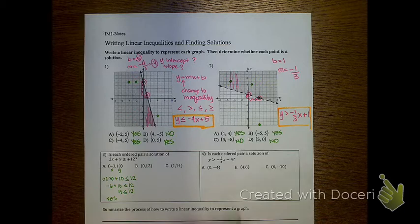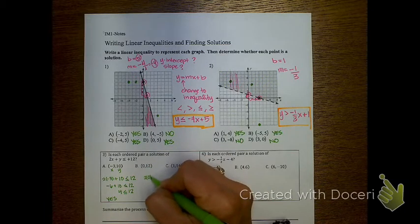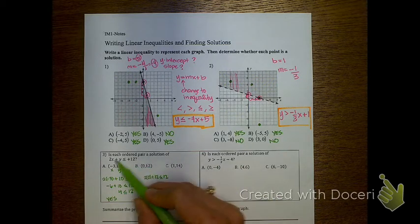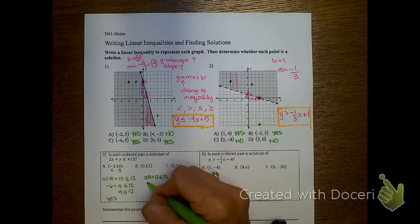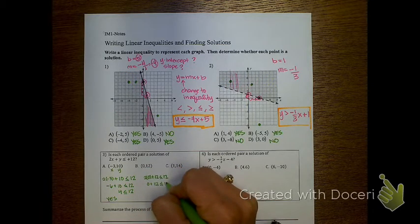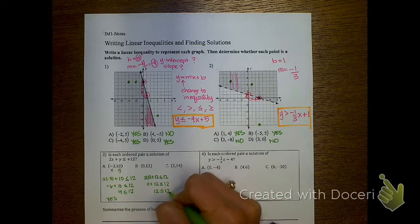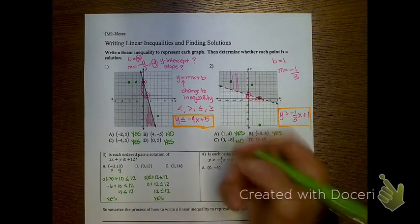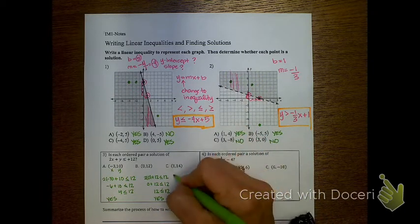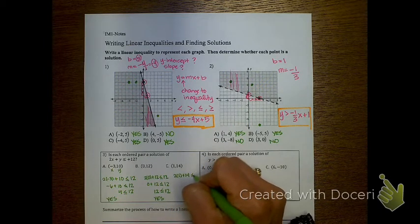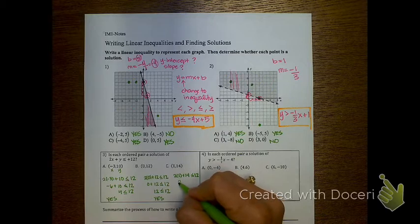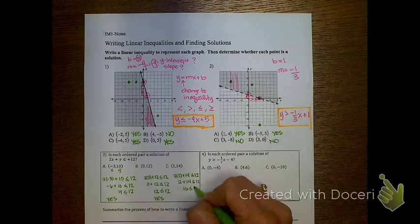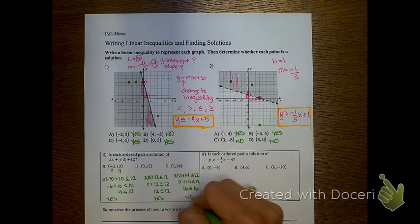Let's check the next one. We have 2 times 0 plus 12, checking if it's less than or equal to 12 — plugging in 0 for X and 12 for Y. That gives us 0 plus 12, which is 12. Is 12 less than or equal to 12? It is equal, so this one is also a solution. For the last one, plugging in X equals 1 and Y equals 14, I get 2 plus 14 less than or equal to 12. That's 16 — is 16 less than or equal to 12? No, so this one is not a solution.